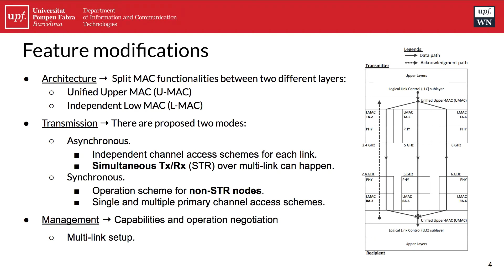However, the addition of multi-link operation requires some changes. The first modification is related to the architecture, in which the MAC layer has been divided into two different parts: first we find the Unified Upper MAC, which is a common part for all interfaces, and then we find the independent Lower MAC. On the right side of the screen you can see a schematic showing the Unified Upper MAC and the independent Lower MAC for each interface.